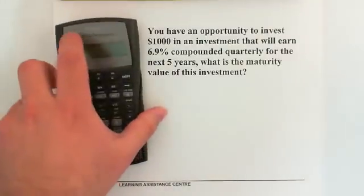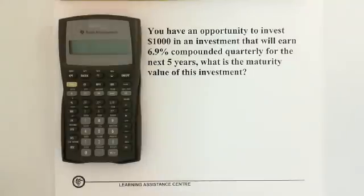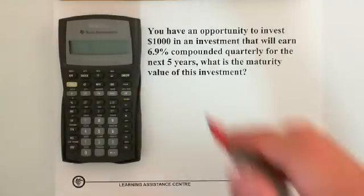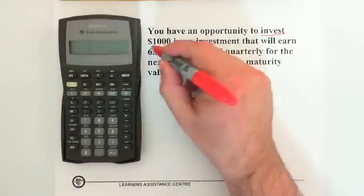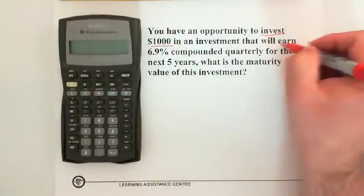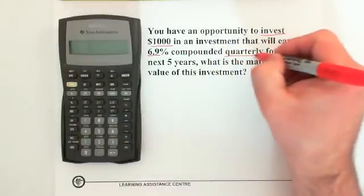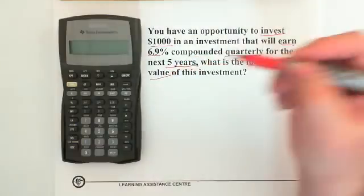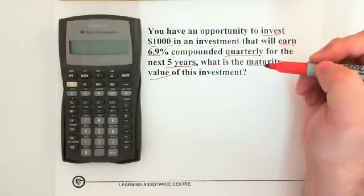Here's the first problem: you have an opportunity to invest $1,000 in an investment that will earn 6.9% compounded quarterly for the next five years. The question asks: what is the maturity value of this investment?